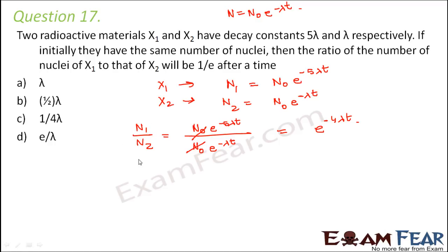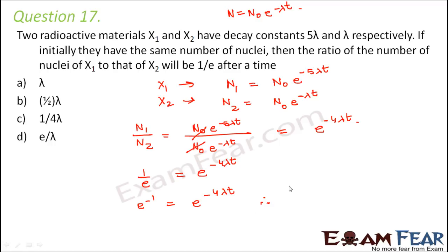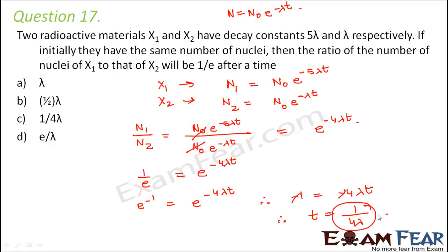The question asks when N1/N2 equals 1/e. So e^(−1) equals e^(−4λT). Since the bases are equal, minus 1 equals minus 4λT, and the minus signs cancel, giving T equals 1/(4λ). So option C is the right answer.